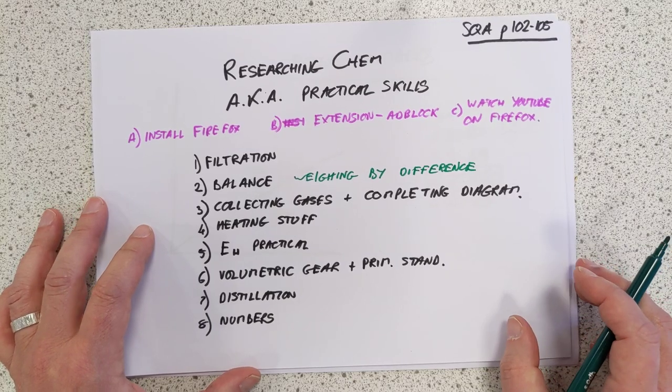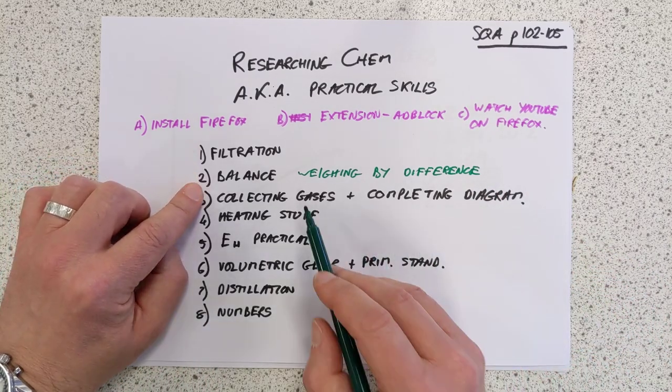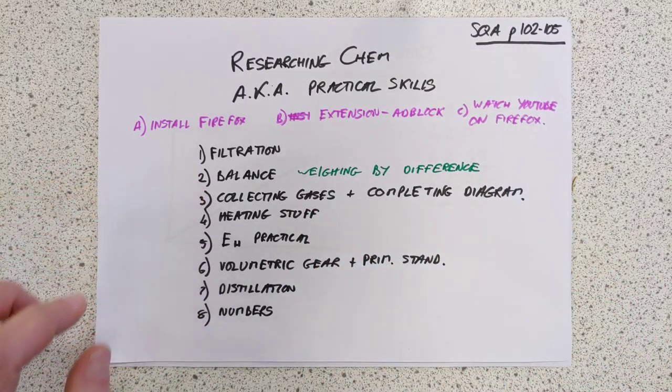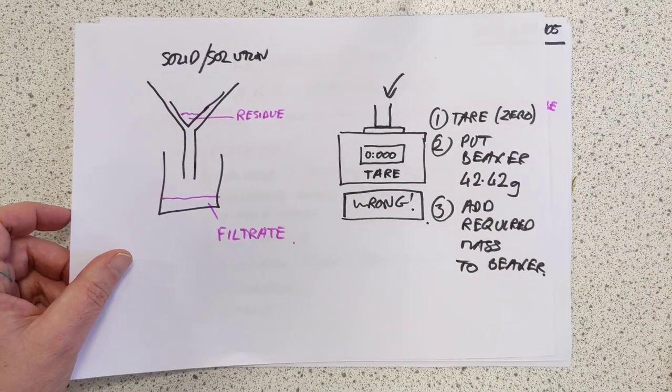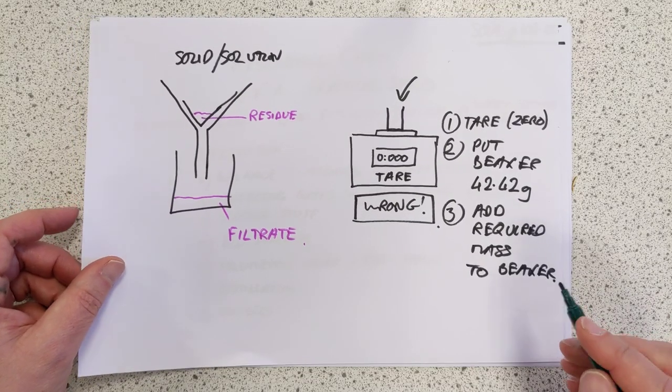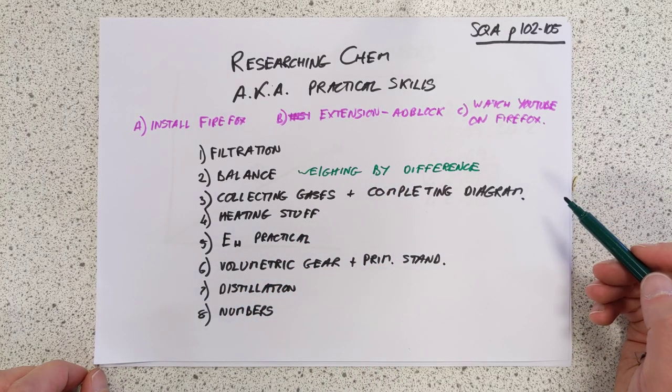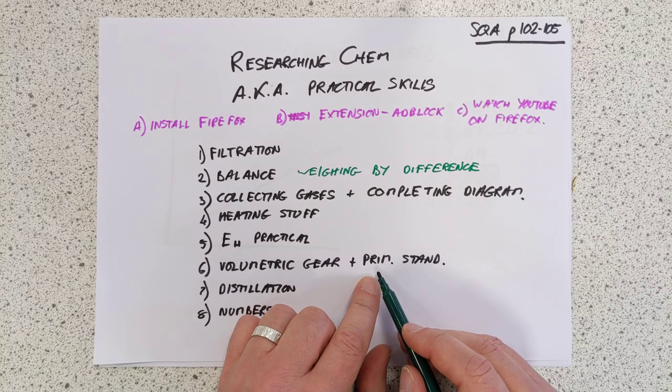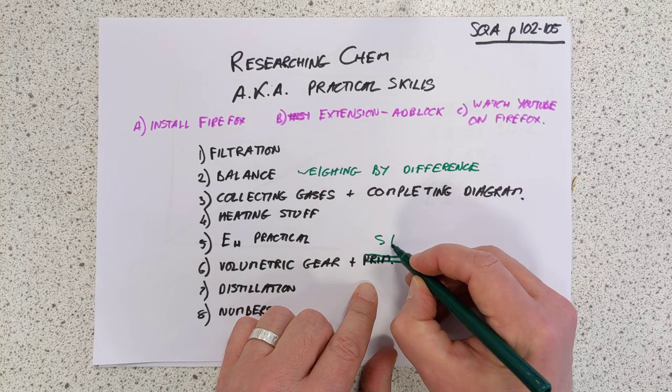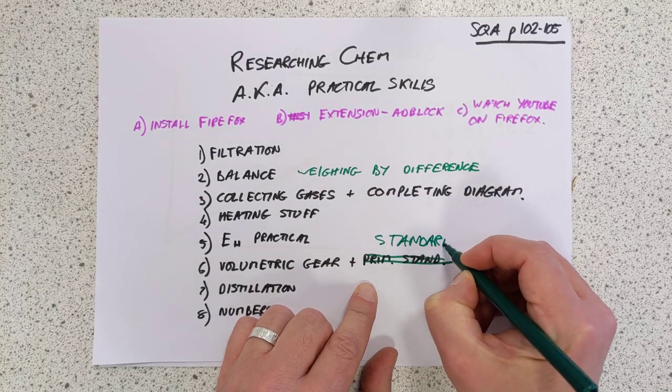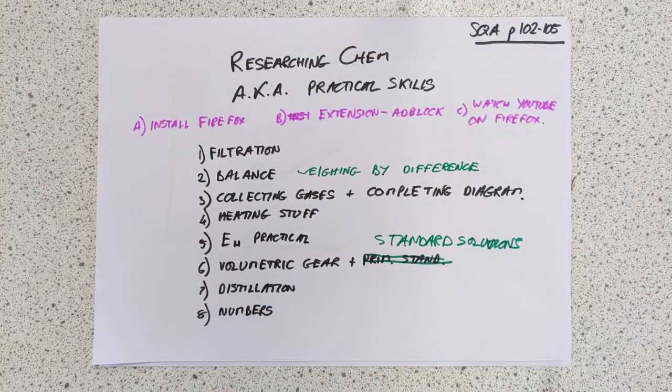So research in chemistry, otherwise known as practical skills. Don't forget, advert-free YouTube. Balance. Did I mention that it was called weighing by difference? This is a process here, the correct way to measure things out, is called weighing by difference, guys. So that's what you need to do if they ever ask you to explain it. And, standard solutions. That's what that should have said. Standard solutions. That's just ones of known concentration. Thank you for listening, folks. Bye-bye.